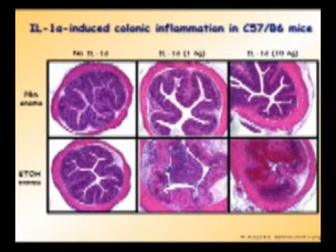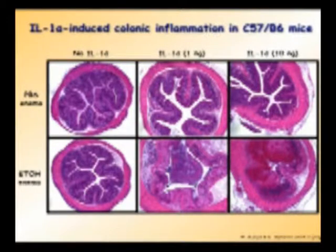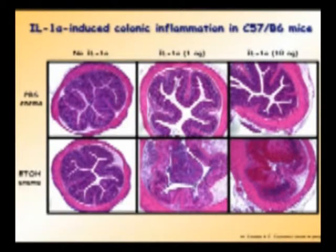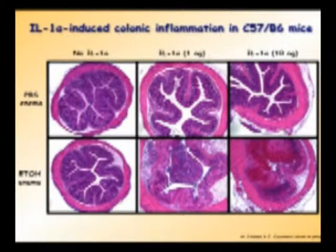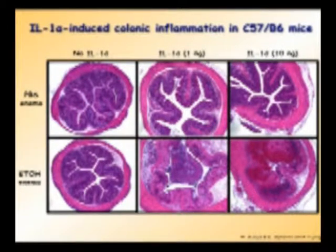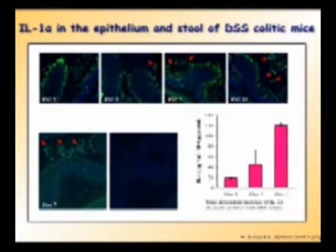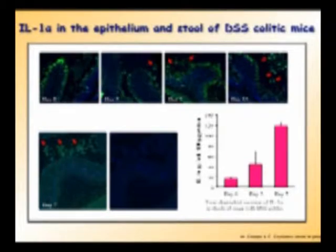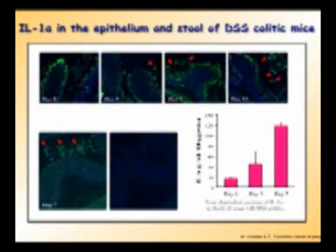We then asked whether IL-1α can cause inflammation in an animal model. We gave enemas of IL-1α to C57BL/6 mice. With a PBS enema, which doesn't disrupt the mucosal barrier, we saw only a mild response. But with ethanol enemas, which dissolve mucus and allow penetration into the submucosal tissue, we saw a very dramatic inflammatory response. Immunofluorescence and confocal imaging showed IL-1α staining of epithelial cells, and from day 0 to day 13 in the upper colon you can see shedding of IL-1α-positive epithelial cells into the lumen, while in the rectum where inflammation is more intense, you can see IL-1α-positive cells and a full inflammatory response.